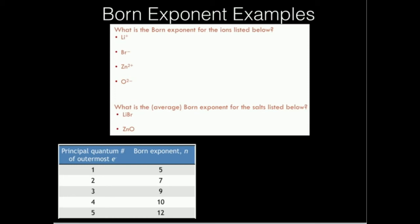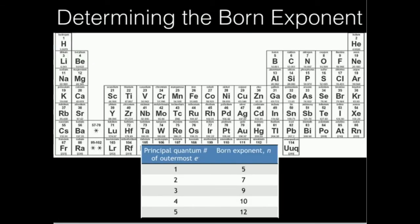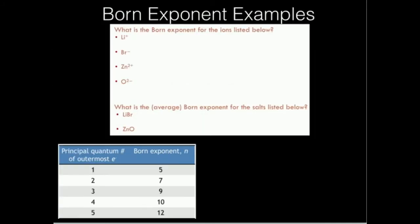Now let's look at bromide, Br minus. Bromine picks up an electron and has an electron configuration of krypton. The principal quantum number of the outermost electron — this is in a 4p orbital, so that means it's a 4. And if it's a 4, that means the Born exponent is 10. So for bromide, it would be 10.